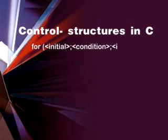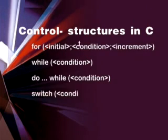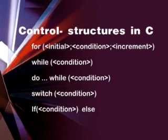These are the control structures of C: for loop, while, do while, switch, and if-else.